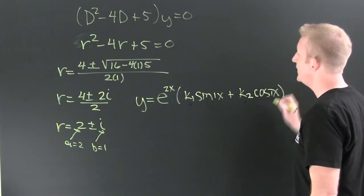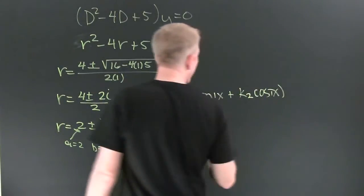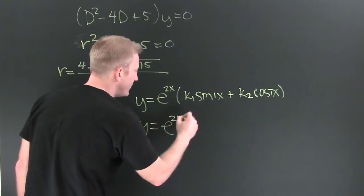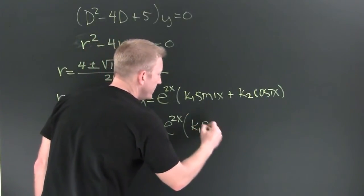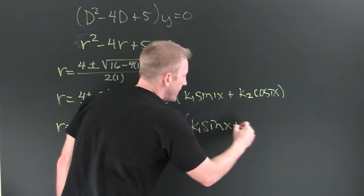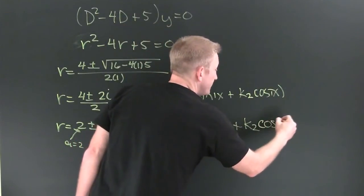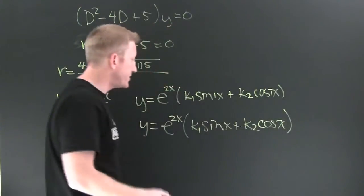Where I would have that one in front from my imaginary part. Clean it up without that nonsense: e to the 2x, and then k1 sine x plus k2 cosine x.